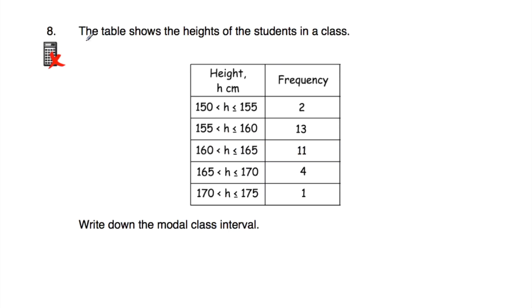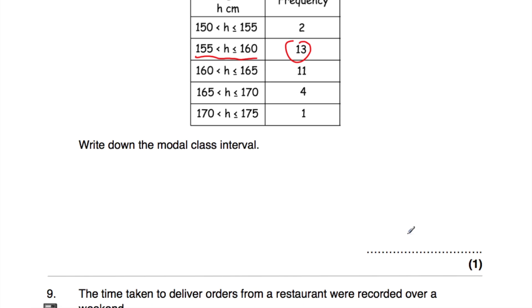Question number eight. The table shows the heights of students in a class — this is a grouped frequency table. We're asked to write down the modal class interval, which is the class interval with the highest frequency. The highest frequency corresponds to the interval: height greater than 155 cm but less than or equal to 160 cm. That is the modal class interval.